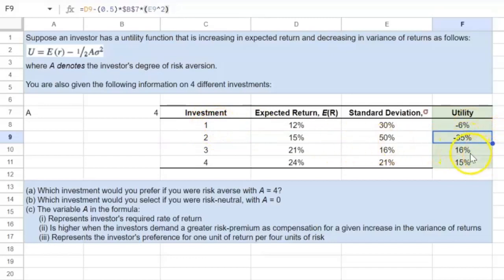And so what I get here is basically the utility that the investor would get for each of these investments. As you can see, the utility is the highest for investment three in this case, where it is basically equal to 16%. So if the investor were risk averse with a degree of risk aversion of four, as represented by the value of A, then they would prefer investment three.